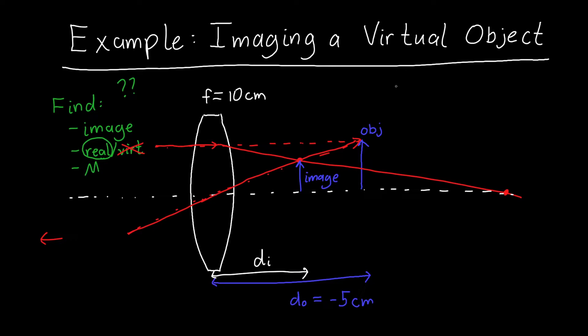Now if I actually wanted to solve for di, and I do because we want to know where the image is located, I can use our imaging equation: 1 over f is equal to 1 over do plus 1 over di.